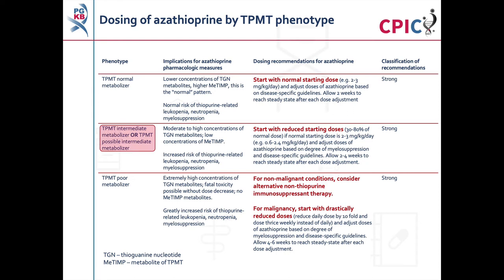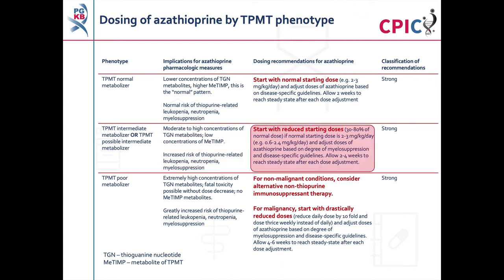Patients who are TPMT intermediate metabolizers will have higher concentrations of thioguanine nucleotide metabolites. These patients are at an increased risk of thiopurine-related myelosuppression and should be started at a reduced dose of azathioprine. This is a strong recommendation.